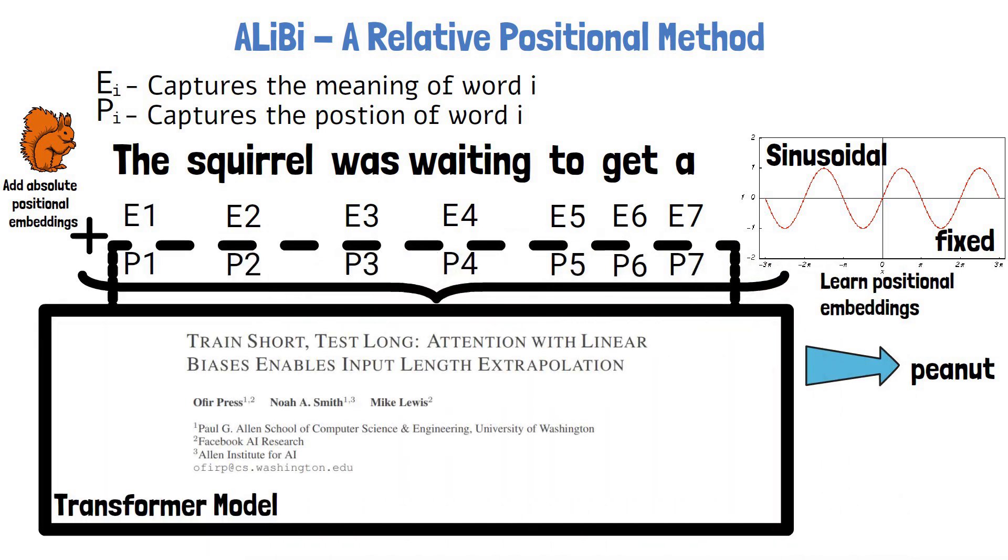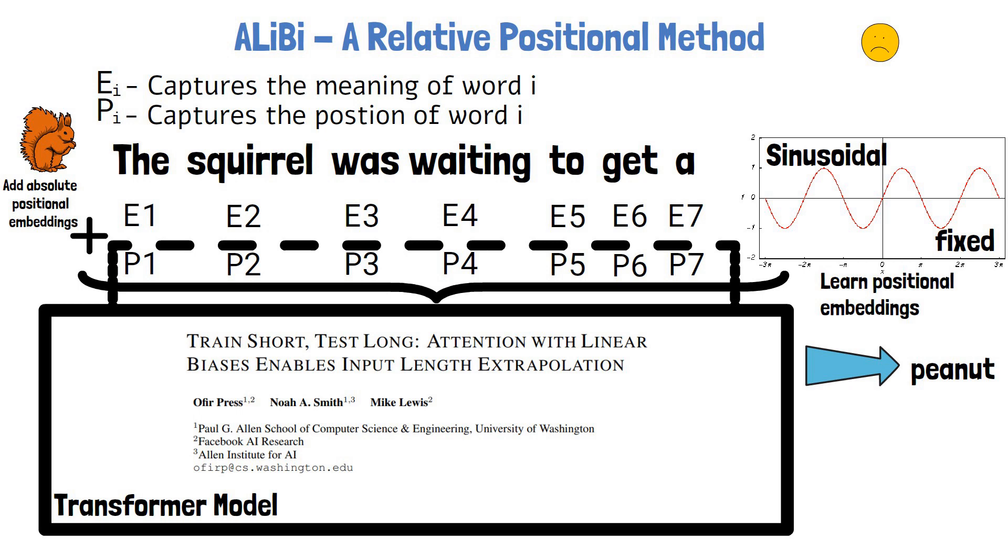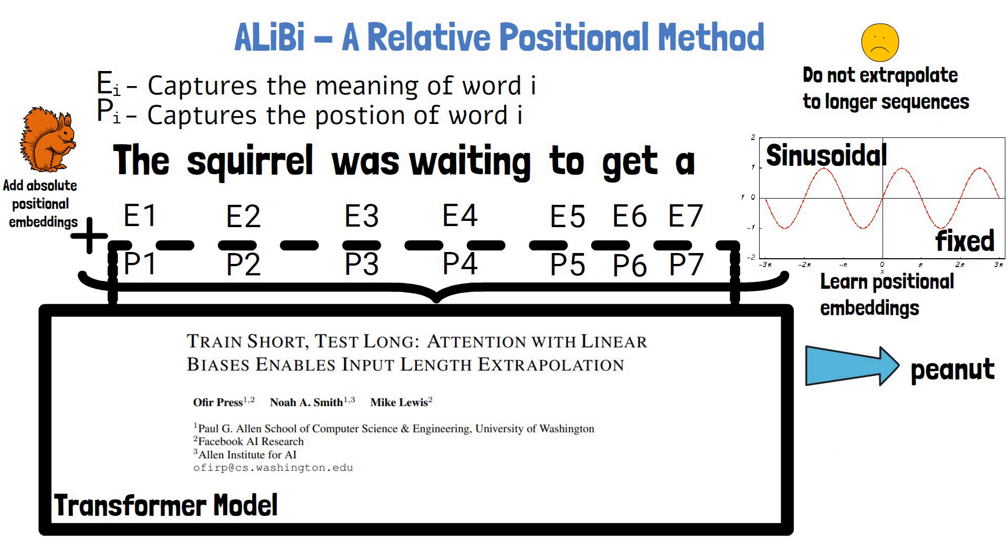In both cases and more, ALiBi research papers show that these methods have a major drawback, which is that they don't extrapolate well to longer sequences, meaning that if in inference time the model encounters a longer sequence than it was trained on, then it gets much less certain about the results.